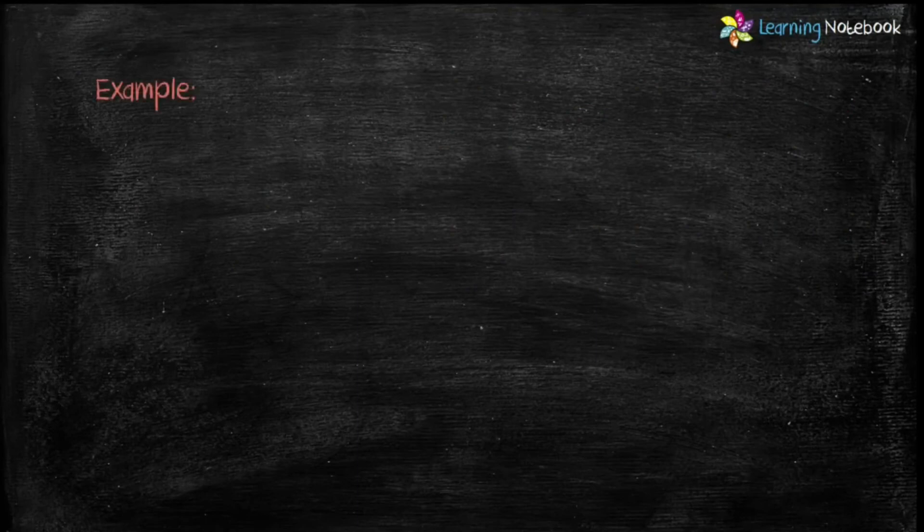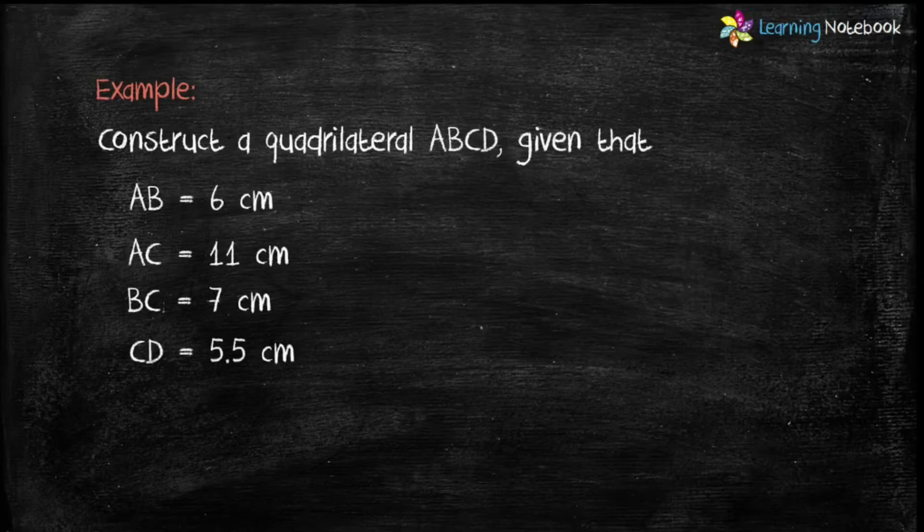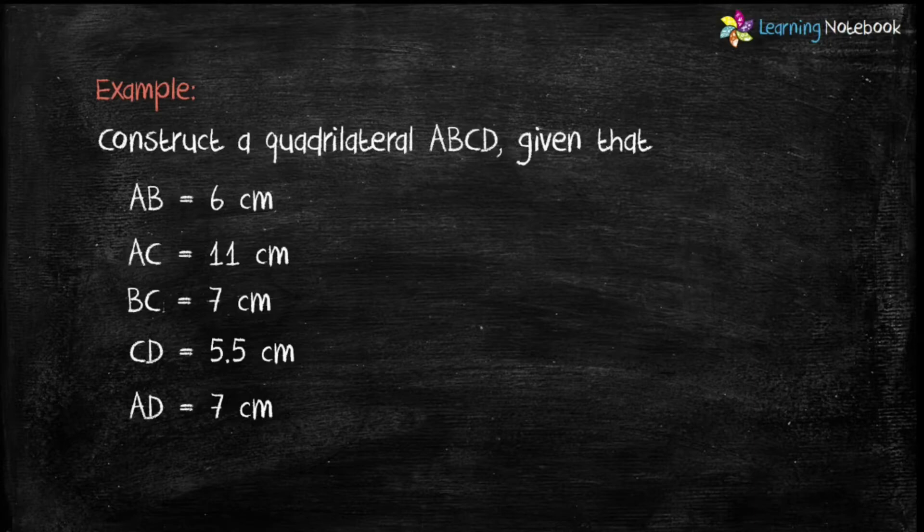Question is, construct a quadrilateral ABCD given that AB equals to 6 cm, AC equals to 11 cm, BC equals to 7 cm,